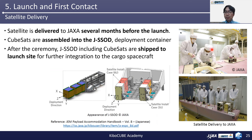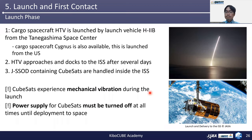After you put the satellite in the table by yourself, inspectors will check the appearance. After the ceremony, JSSOD including CubeSats is shipped to the launch site for further integration to the cargo spacecraft. The cargo spacecraft HTV is launched by rocket H-IIB from Tanegashima Space Center. The cargo spacecraft Cygnus is also available, launched from the United States. HTV approaches and docks to the ISS after several days. JSSOD containing CubeSats is handled inside the ISS.